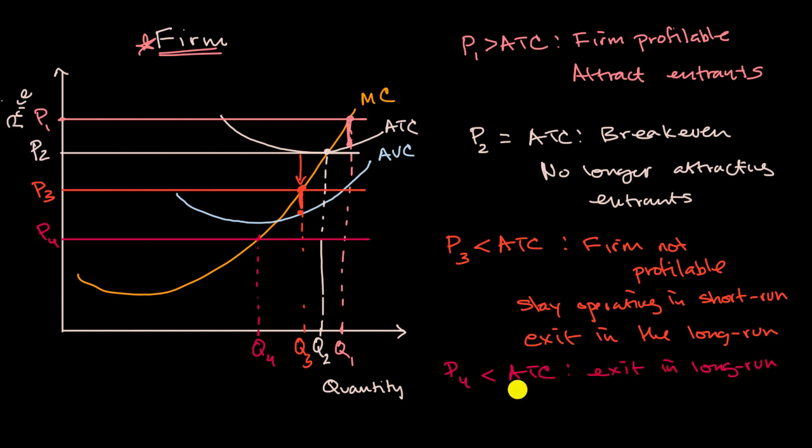But you wouldn't even wait for that long, wait to sell your factories. Because P sub four is less than your average variable cost, you would also just shut down, shut down in the short run.